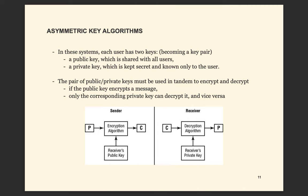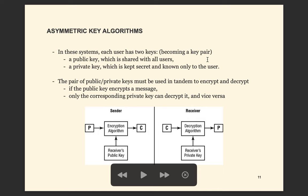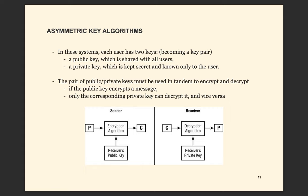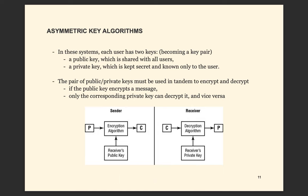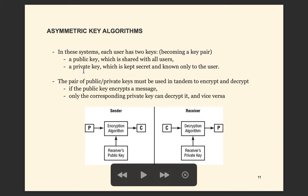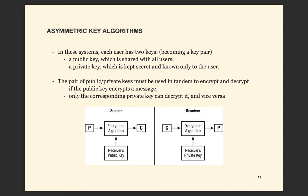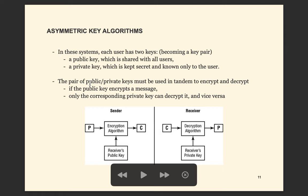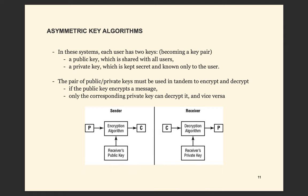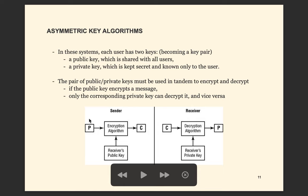Now let's take a look at the asymmetric key algorithm and see how it works. In the asymmetric key algorithm, there is a pair of keys — two keys. First is a public key and second is a private key. For example, if Alice wants to send data to Bob, Alice will have Alice's public key and Alice's private key. Alice's public key can be shared with all other users, but Alice's private key has to be kept secret and known only by Alice. To encrypt and decrypt, we use a public-private key pair.